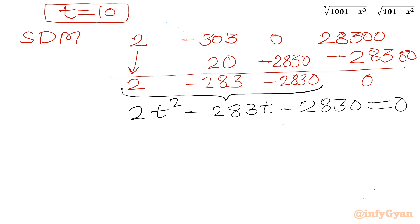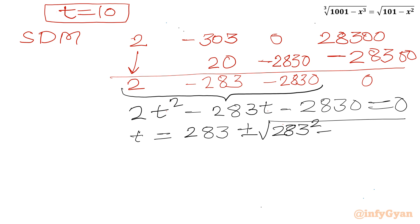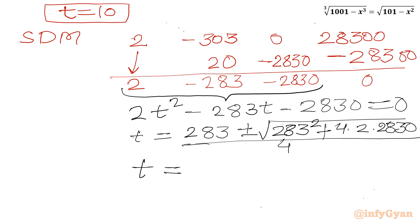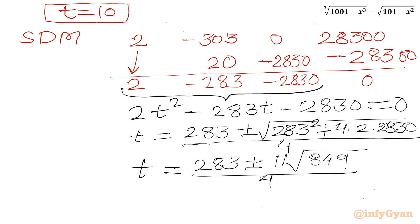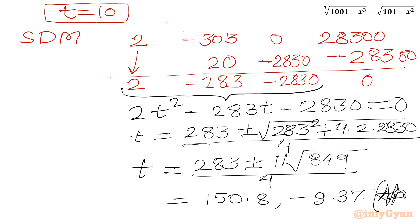Let us apply the quadratic formula. So t equals minus b, which is 283, plus or minus square root of b square minus 4ac, where a is 2 and c is zero, all divided by 2a which is 4. After simplification we get 283 plus or minus 11 square root of 849, divided by 4. Finding decimal values, this gives approximately 150.8 and negative 9.37.